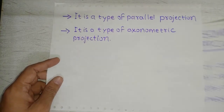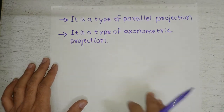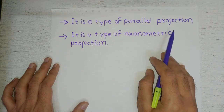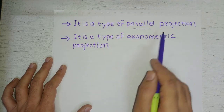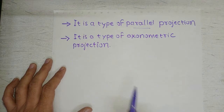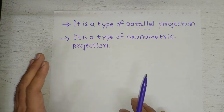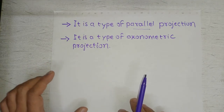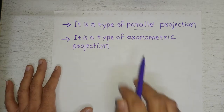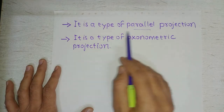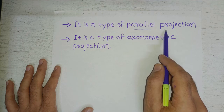Isometric projection is a type of parallel projection, where the projection lines remain parallel to each other. So isometric is a type of parallel projection.